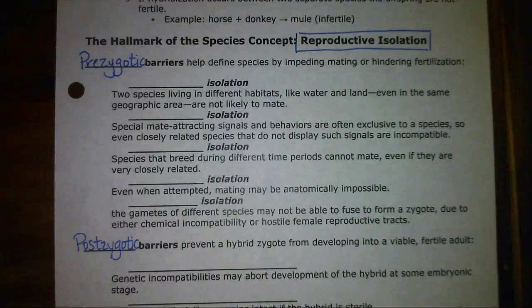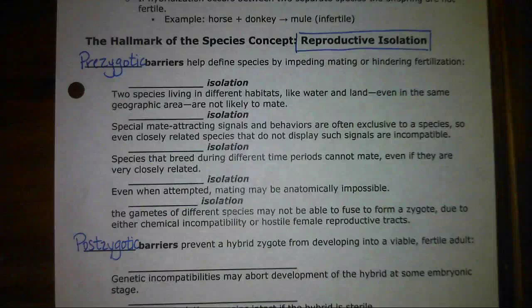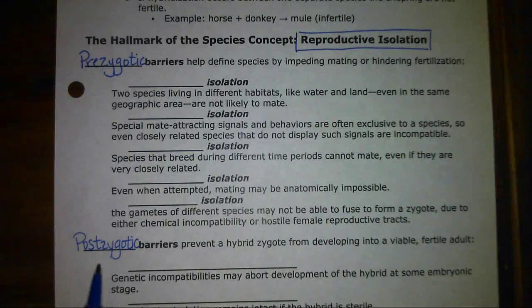Think about what those two words might mean — pre and post, meaning before and after. Zygotic refers to the formation of the zygote. So if there's a barrier to reproduction before fertilization that doesn't even allow fertilization to occur — a zygote is never formed — then it's a prezygotic barrier. On the other hand, if something happens after the zygote forms that prevents viable or fertile offspring, that's a postzygotic barrier.